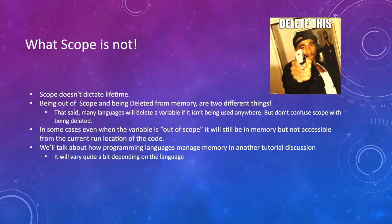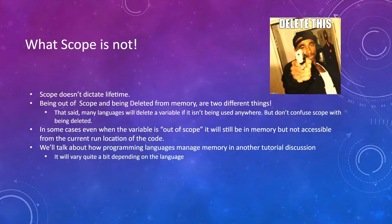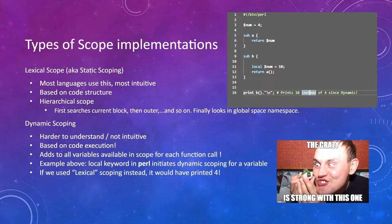We'll talk about how programming languages manage memory in other tutorials — it varies widely by language. GDScript manages a lot of memory automatically. As long as there are no references, objects get deleted automatically. If it's a node that's a child of some node in your scene, you have to call Q free. Anyway, that's a lot of ground for this topic.